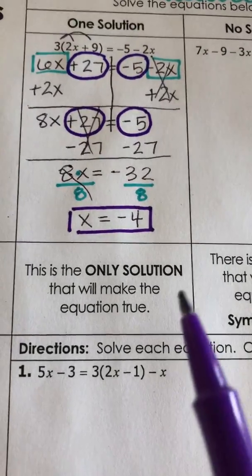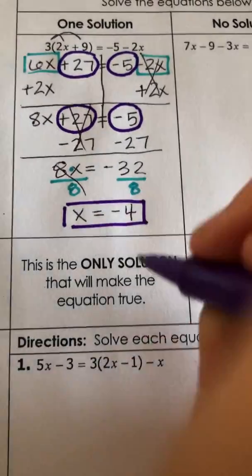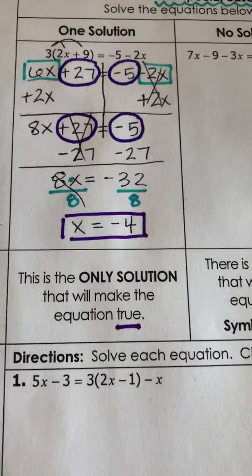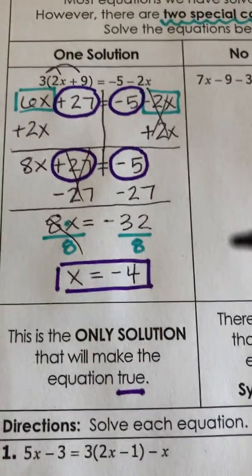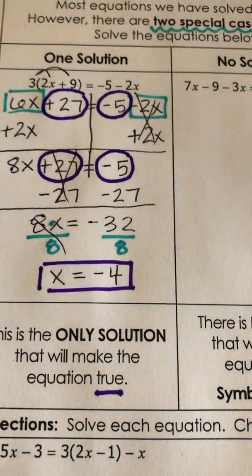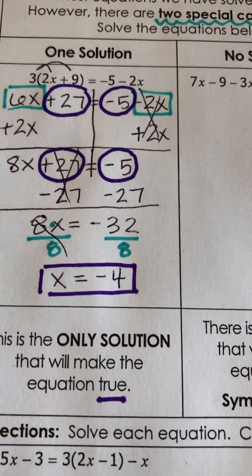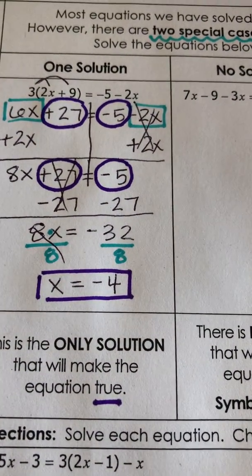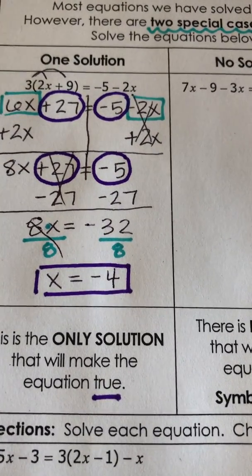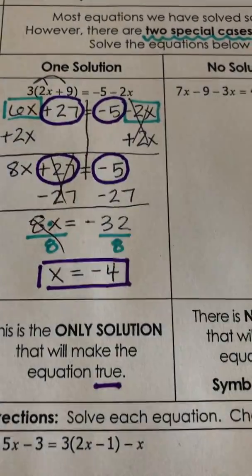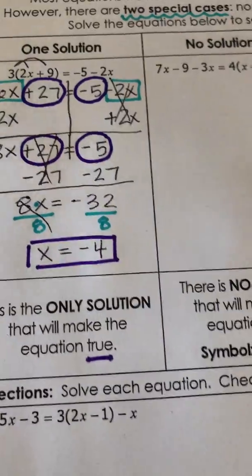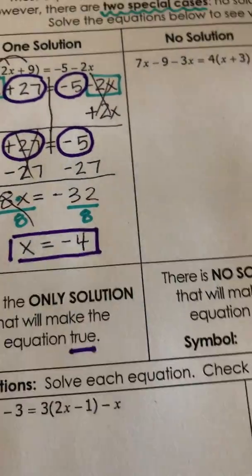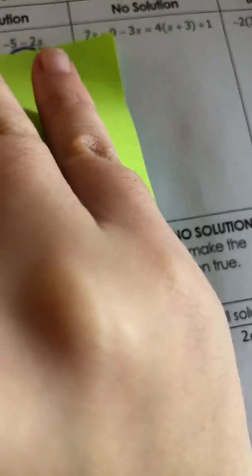X equals negative 4 is the only solution that will make the equation true. This is also called checking your solution — if we plug our answer back into the original equation and evaluate, we should get the same number on the left as on the right, giving us a true statement. So plugging negative 4 back in everywhere we see x should confirm our answer.